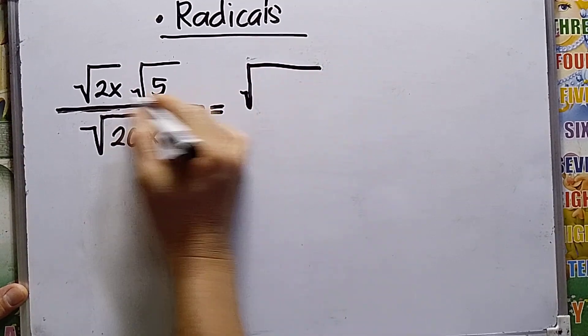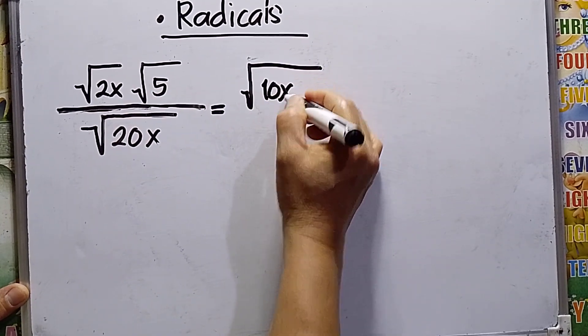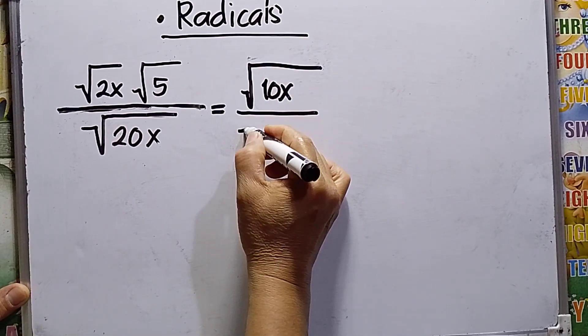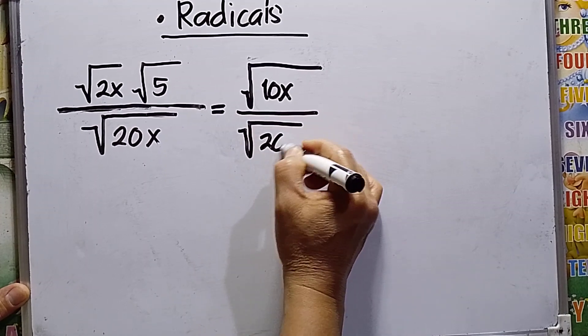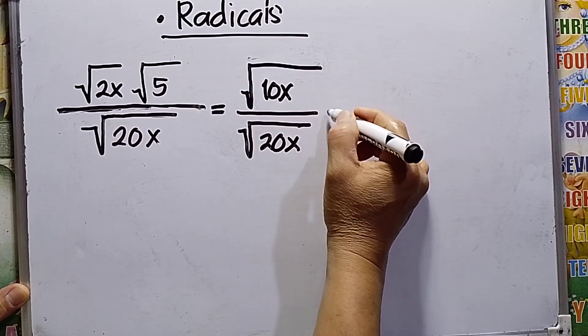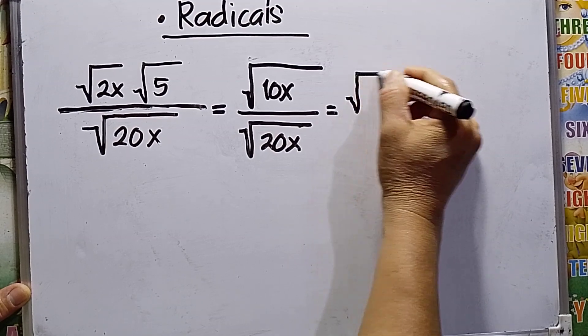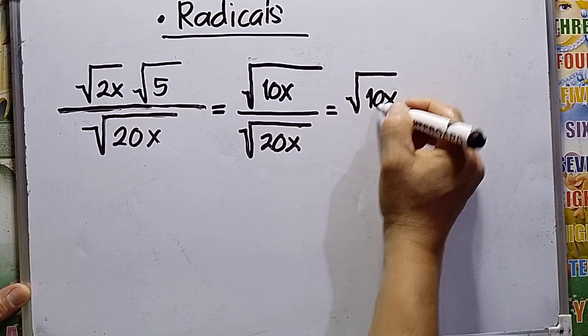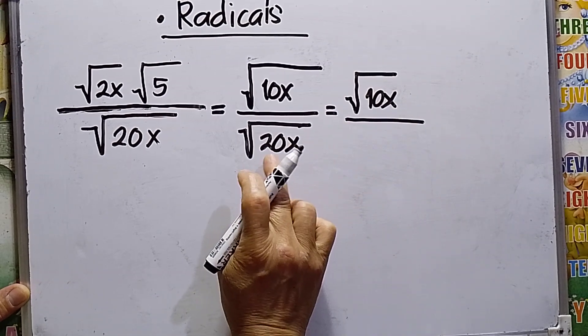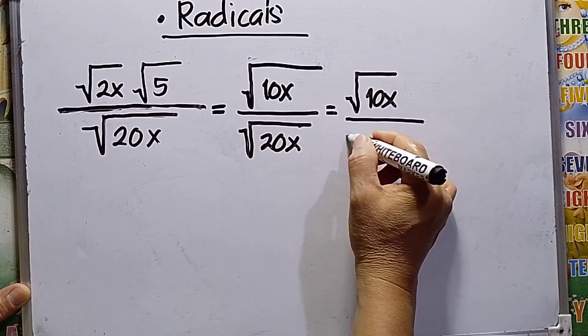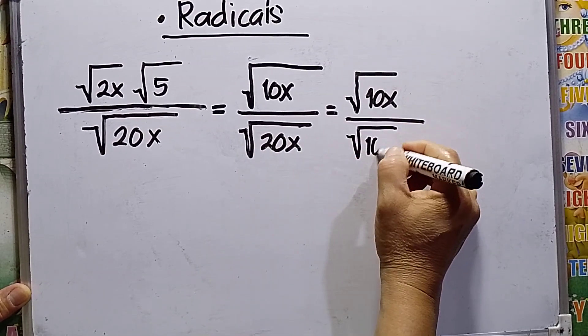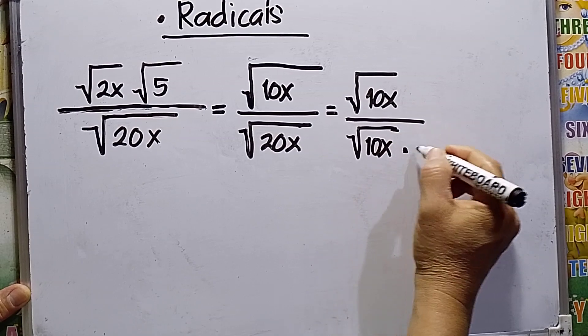This equals square root of 10x. I can split the denominator as 10x times square root of 2. So this becomes square root of 10x divided by square root of 10x times square root of 2.